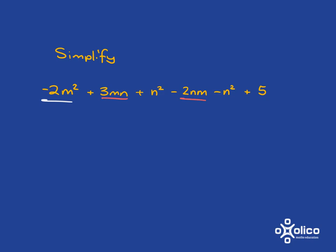And then we have here n squared. Are there any other n squareds? Yes, over here. And then the last term remaining is a 5, a number on its own, and there are no other numbers on its own, so that one's not going to have a partner.